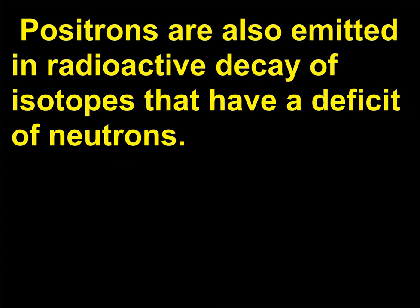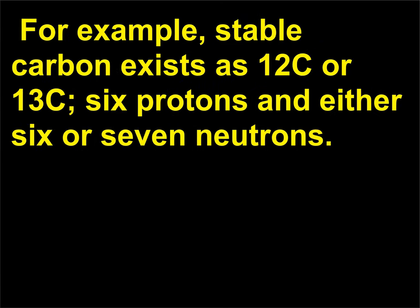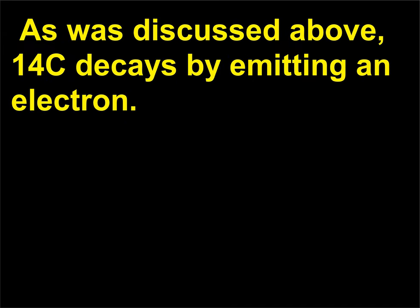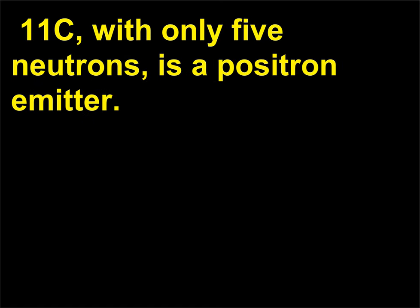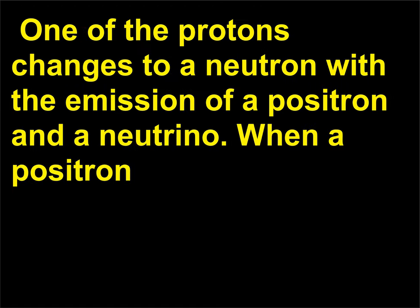Positrons are also emitted in radioactive decay of isotopes that have a deficit of neutrons. Stable carbon exists as ¹²C or ¹³C (6 protons and either 6 or 7 neutrons). ¹⁴C decays by emitting an electron — one of the neutrons changes to a proton with the emission of the electron and antineutrino. On the other hand, ¹¹C, with only 5 neutrons, is a positron emitter — one of the protons changes to a neutron with the emission of a positron and a neutrino.